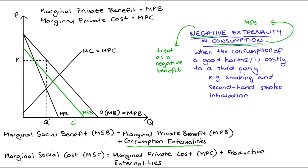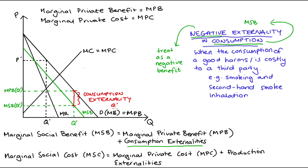To illustrate the interpretation for one quantity — say the Q-prime unit — the private benefit to the consumer when they consume that unit is read from our demand curve. The marginal social benefit for that Q-prime unit is read from the MSB curve and is lower than the marginal private benefit level because we've subtracted the negative externality. The gap between the two levels is the value of the external cost — the harm associated with consuming that unit.